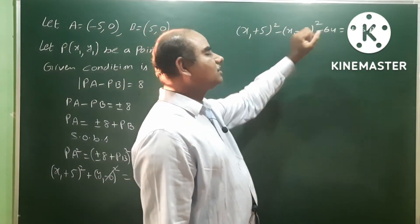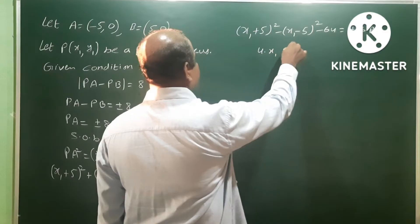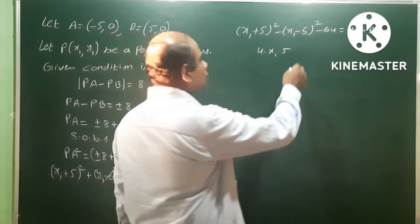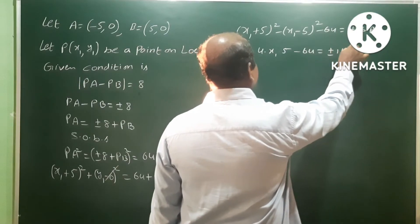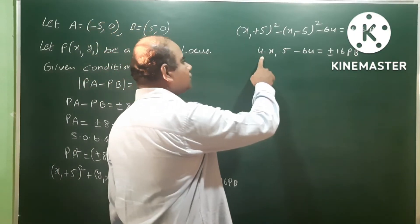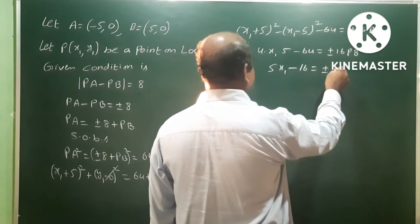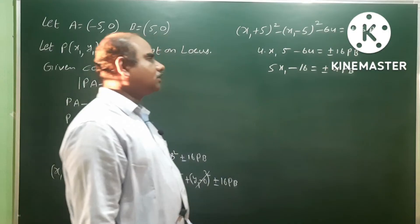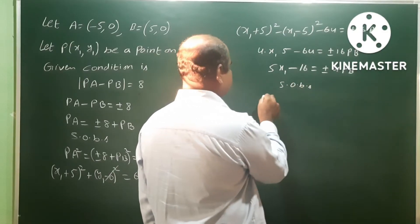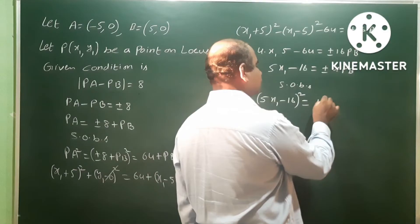Using the identity (a + b)² minus (a - b)² equals 4ab, where a = x₁ and b = 5, this gives 4 × x₁ × 5 = 20x₁. So 20x₁ minus 64 equals plus or minus 16 PB. Dividing through, the 4 cancels giving 5x₁ minus 16 equals plus or minus 4 PB. Now squaring on both sides again to get the locus: (5x₁ minus 16)² equals 16 PB².